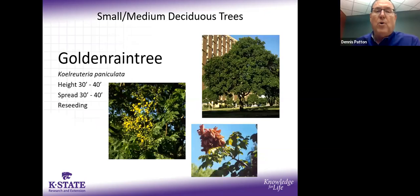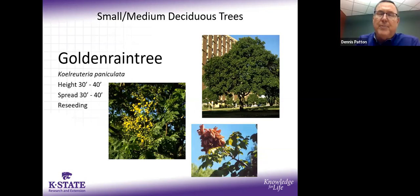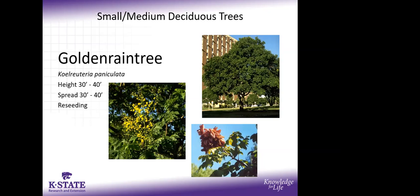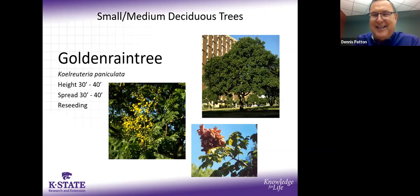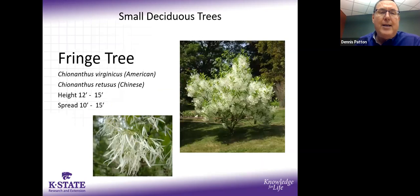Golden rain tree blooms a bit later in June. Some people dislike it because it can reseed and has become somewhat invasive, spreading into nearby woods, and you will get seedlings popping up in your yard. On the positive side, it's a nice round-headed, very dense tree. Some don't like the brown dry seed pods, and it can attract box elder bugs in fall. But it does give you a seasonal difference in color.